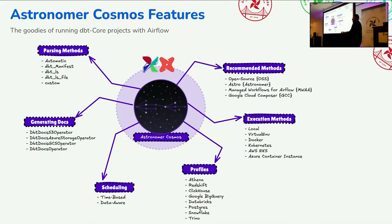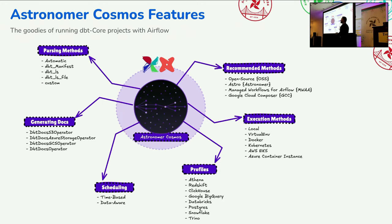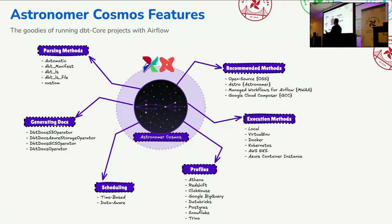But it's not only that. Astronomer Cosmos extends the integration between dbt and Airflow much further, offering different ways to operate and use it. There are recommended installation methods: you can install locally, on GCS for managed workflows for Apache Airflow, or basically anywhere. If you're hosting Airflow on MWAA, Google Cloud Composer, or Astro, there's documentation for each, and Astro makes it the most seamless.